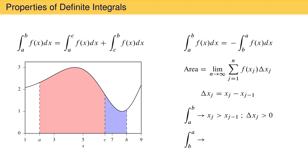When integrating from right to left, from b to a, we start counting j from the right side of the plot. So x sub j is the left side of each rectangle while x sub j minus 1 is the right side. This means that x sub j is always less than x sub j minus 1, making the width of each rectangle negative. This is why changing the direction of integration from left to right to right to left changes the sign of the integral.